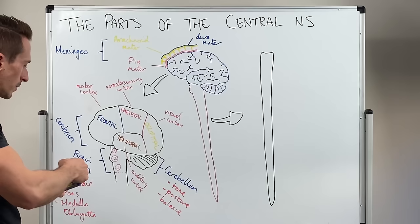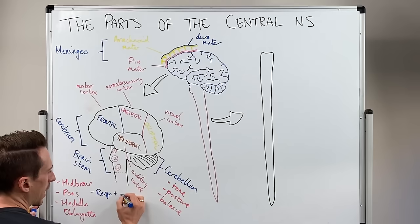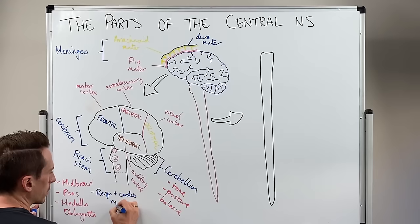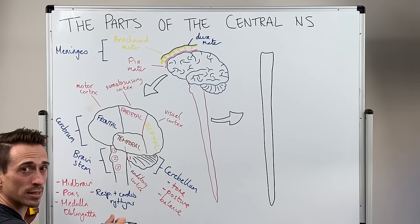But the brainstem is important for a number of other reasons. For example, it's extremely important when it comes to respiratory and cardiovascular rhythms. So that's breathing rhythms and heart rate. Really important here at the brainstem.